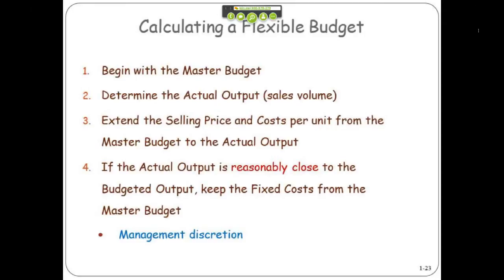This is where you get to use some management discretion. If you believe that you were reasonably close in terms of your actual output versus your budget output, then you just keep the fixed costs in your flexible budget from your master budget. That's a discretionary decision you get to make. It'll figure itself out later when you do your fixed cost analysis anyway.